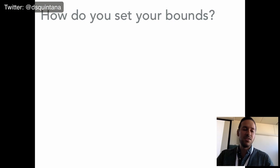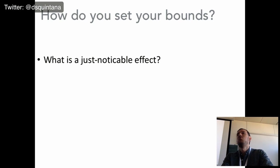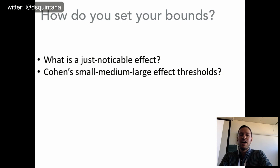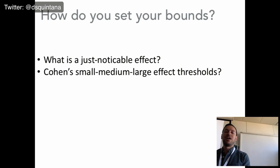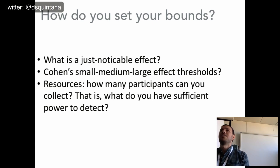How do you set your bounds? This is a difficult question. One way of looking at it is: what is a just noticeable effect? Depending on your research question, this can change. You can also look at Cohen's small, medium, and large effect thresholds, but as we've learned, these are just rules of thumb — so maybe not the best option. When you ask people what a just noticeable effect is, often you'll get a shrug — they don't know.